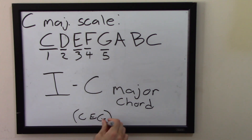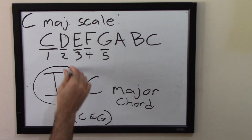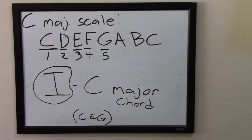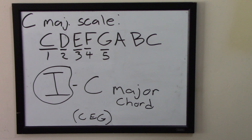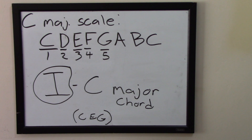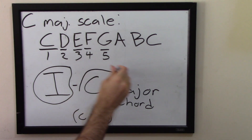We started on the first note of the scale and we extracted a triad. That triad we took out of the C major scale, we can call that the I chord, because we started on the first degree of the scale. So when we're using the C major scale, we can call a C major chord the I chord. You typically write that with a capital Roman numeral I — capital because it's major. Lowercase would mean that it's minor. It's I because it starts on the first degree of the scale. You all already know what a C major chord sounds like, but I'm going to go ahead and play one for you right now.